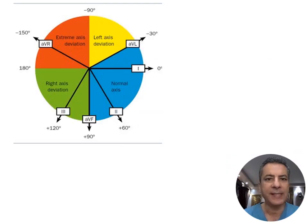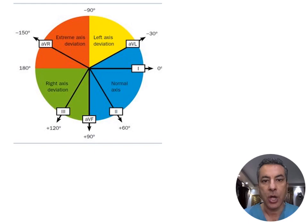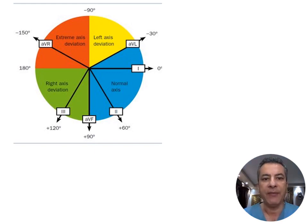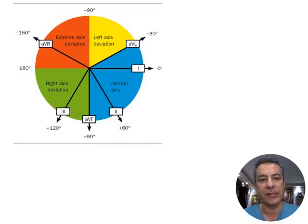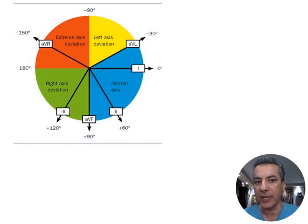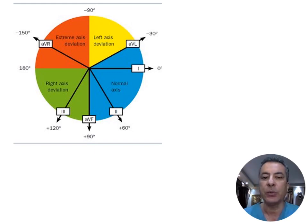The hexaxial reference system of the frontal plane shows the different ranges of the mean frontal QRS axis. The normal axis ranges from minus 30 degrees to plus 90 degrees. Left axis deviation ranges from minus 30 to minus 90 degrees. Right axis deviation ranges from plus 90 to 180 degrees. Finally, the extreme or no-man's-land axis lies between 180 and minus 90 degrees.